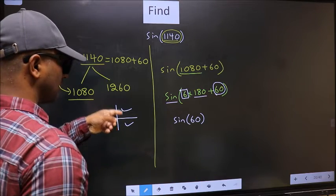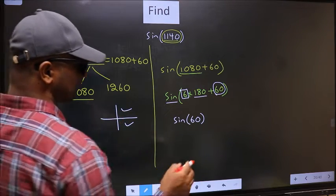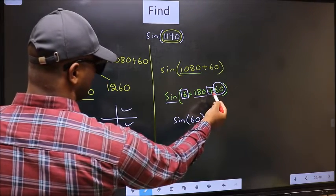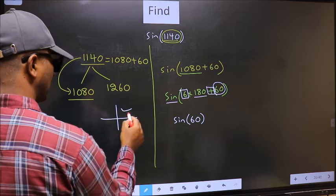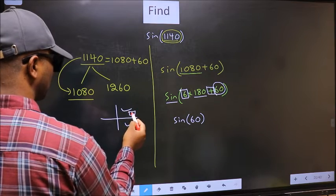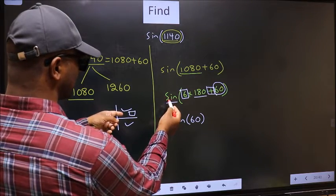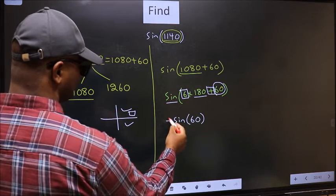So now to select the quadrant, we should look at this symbol. Here we have plus. That means the angle lies in the first quadrant. And in the first quadrant, sin is positive. So we should put plus.